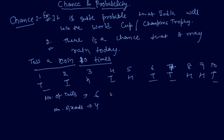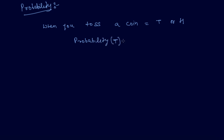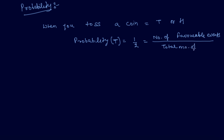Now let me tell you about what is probability. So students, now we come to probability. I am giving you a similar example. When you toss a coin, either you will get tail or you will get head. The probability of getting a tail is one-half. The probability is the number of favourable events upon the total number of events.